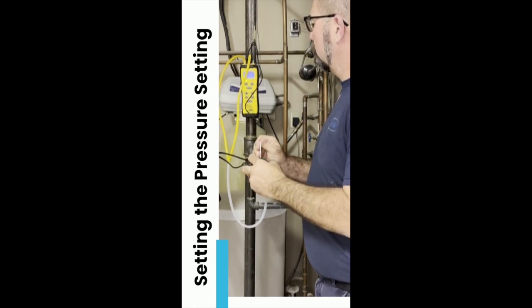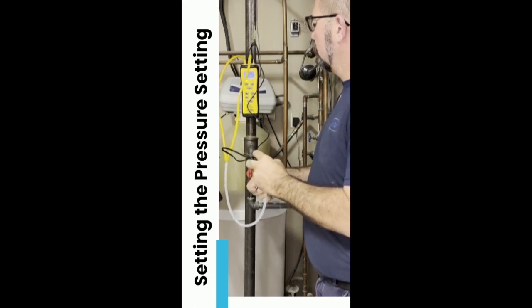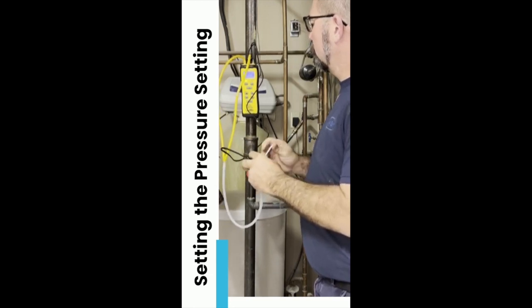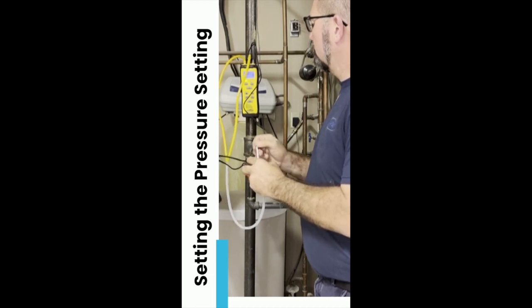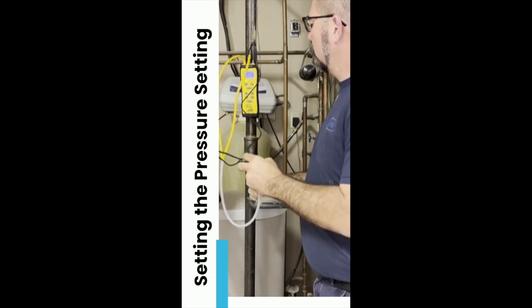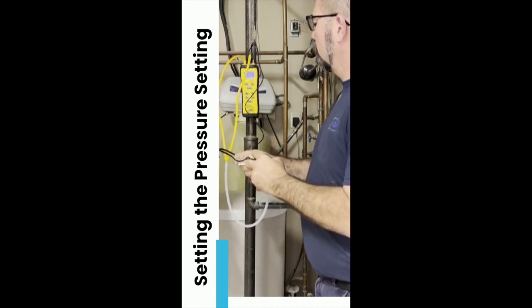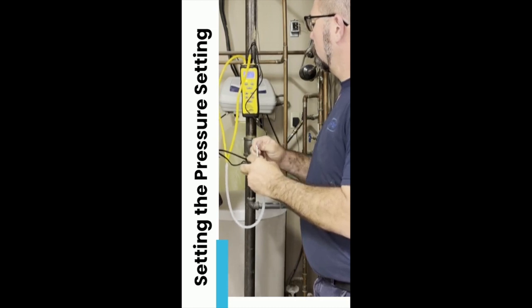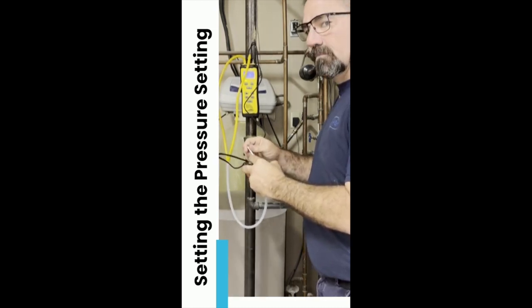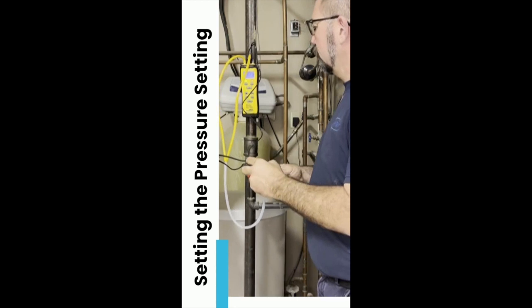Right about there. You can kind of hear that snap switch. Not sure you can hear it on the video, but we can hear it here. Right there. I would say we've got it set about perfectly. That's how you set a universal pressure switch. Any questions, feel free to call ESP Company.